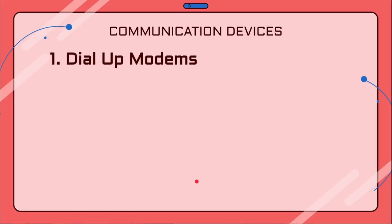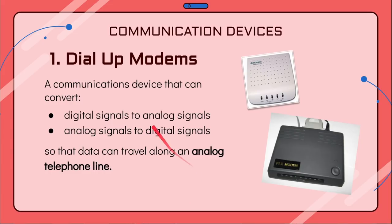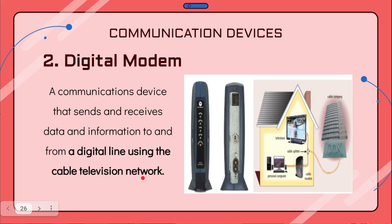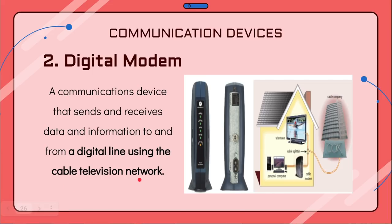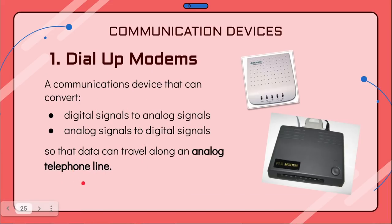The first type of modem is the dial-out modem, which is a communication device that can convert between digital and analog signals so that data is able to travel using analog telephone lines. We also have the digital modem, which is similar to the dial-out modem except that it sends and receives data to and from a digital line using the cable television network. So the key difference: digital modem uses the cable television network, while dial-out modem uses the analog telephone line.